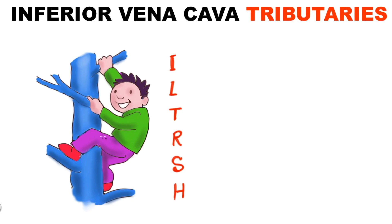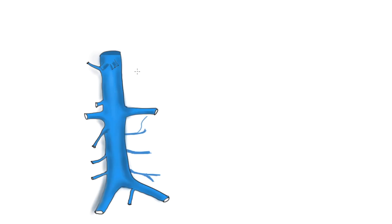Hello everyone. Today I found a good mnemonic about inferior vena cava tributaries. Let's see the branches and tributaries first.